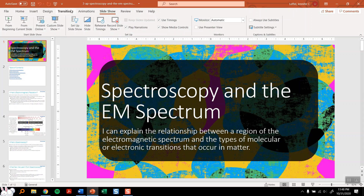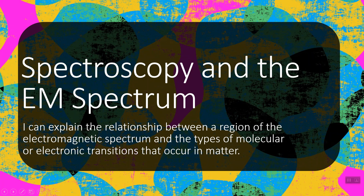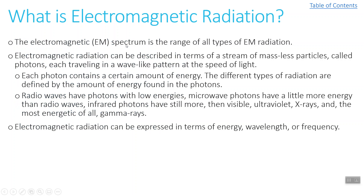Taking a look at this presentation, we're trying to explain the relationship between the region of the electromagnetic spectrum — in other words, the energy — and the types of transitions that occur. Starting with: what is electromagnetic radiation? This is a spectrum, a range, of all different types of electromagnetic radiation. We can think of electromagnetic radiation in terms of photons — massless particles traveling in a wave-like pattern at the speed of light. Each photon contains a specific amount of energy, and the different types of radiation are defined by the amount of energy in those photons.